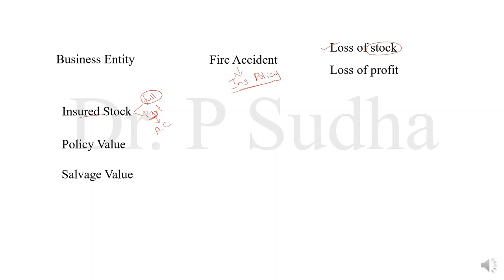In this video, we will talk about when the full value of the stock is insured. When only a portion of the stock is insured, the average clause applies — we will see that in the next video, the link is given in the description box. Policy value is the amount for which the insurance policy is taken. Salvage value means the portion of goods that are saved from the fire accident. The amount of claim formula applies when the stock is fully insured. The formula is: stock on date of fire minus salvage value.